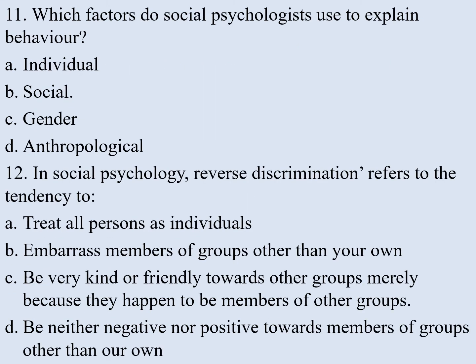Number eleven. Which factors do social psychologists use to explain behaviour? a) individual factors, b) social factors, c) gender, d) anthropological. The correct answer is b — social factors.